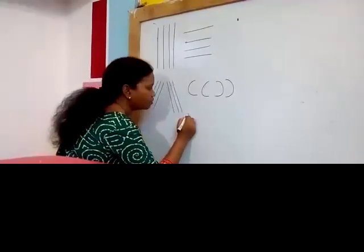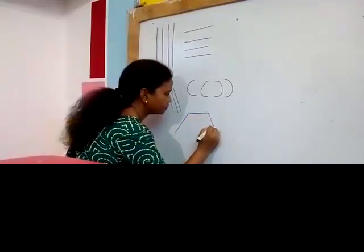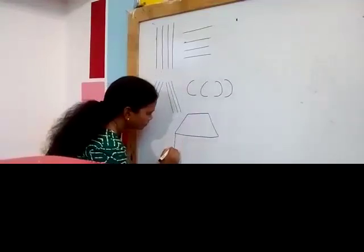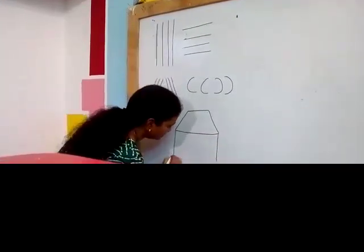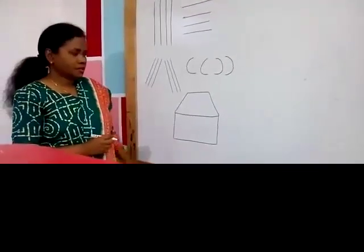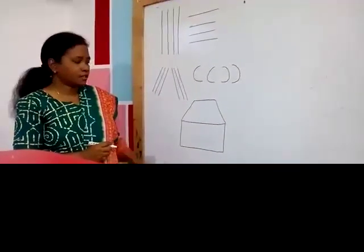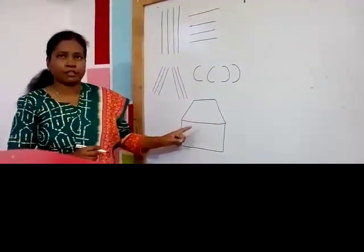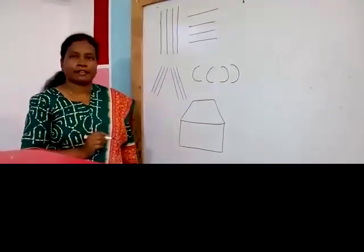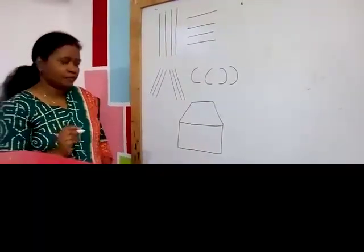Now I will make a house. This is the house. But wait a minute — is there something missing? Yes, door and window are missing. So by the help of standing and sleeping line, I will make a door and a window.